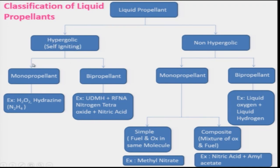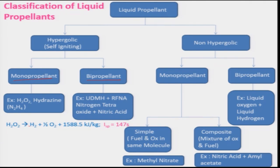Hypergolic propellant is again divided into two categories: one is monopropellant — mono means single — and bipropellant means two propellants will be used. The single propellant has several kinds; some examples are hydrogen peroxide and hydrazine. Keep in mind that this single propellant can be decomposed into its products particularly when it is heated or comes in contact with catalysts. For example, hydrogen peroxide can be decomposed into hydrogen and oxygen whenever it comes in contact with catalysts, releasing 1588.5 kJ/kg of heat.